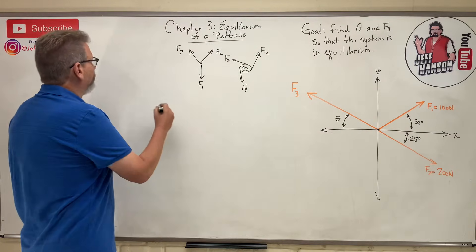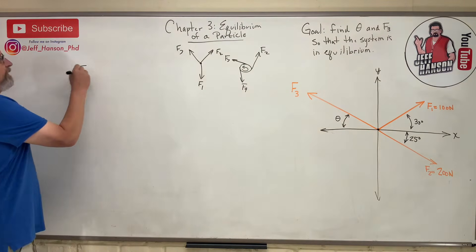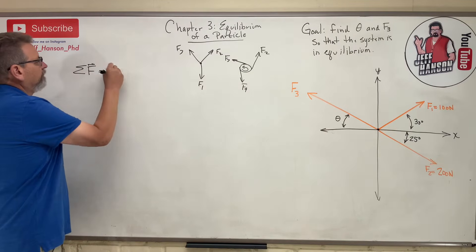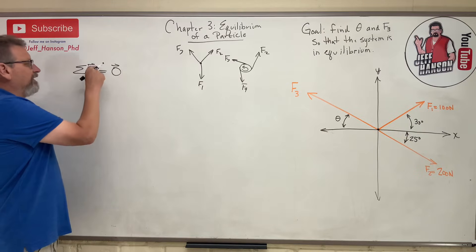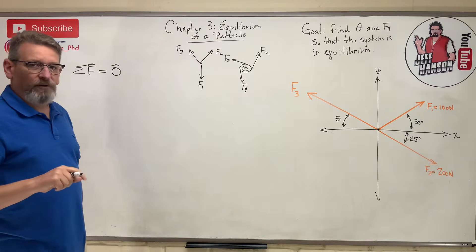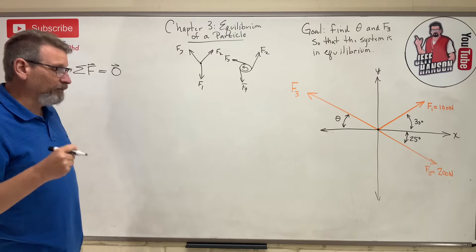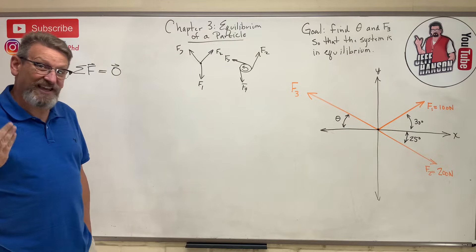Because what we have here is this. We've been talking about vectors. Some of the forces equal zero. And there's a vector symbol over both of those. So we had vector equations like IJK equations.